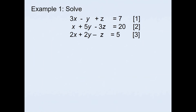Let's look at the first example. We have three equations: 3x − y + z = 7 (equation 1), x + 5y − 3z = 20 (equation 2), and 2x + 2y − z = 5 (equation 3). We'll eliminate z by multiplying equation 1 by 3 and adding it to equation 2.